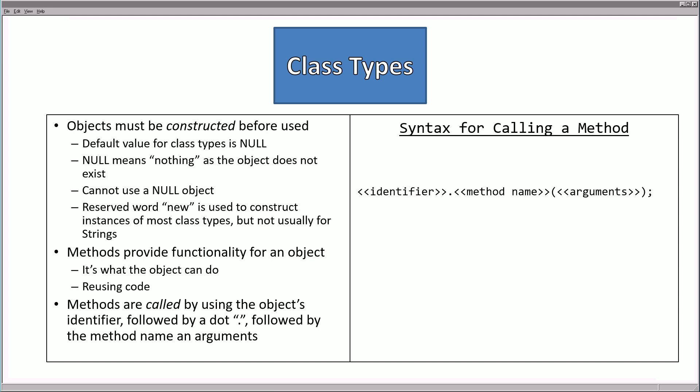The reserved word NEW is used to construct the instances of most class types, but as we're going to see, we don't usually use it for strings. Methods provide functionality for an object — it's what the object does. Think of it this way: the object can be considered a noun, and the methods are considered the verbs. We are communicating with the machines, so it's good to know what are nouns and what are verbs. Whenever we're calling methods, what we're doing is reusing code. The way that we call these methods is by using the identifier, the dot, followed by the method name and the arguments.